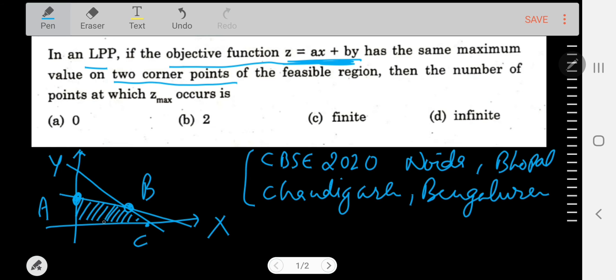z_max will occur at each and every point of the line segment which joins point A and point B. Therefore, we will have infinite number of points on the segment AB at which the objective function z will be maximum. And therefore, option D will be correct for this problem. Thank you very much for watching